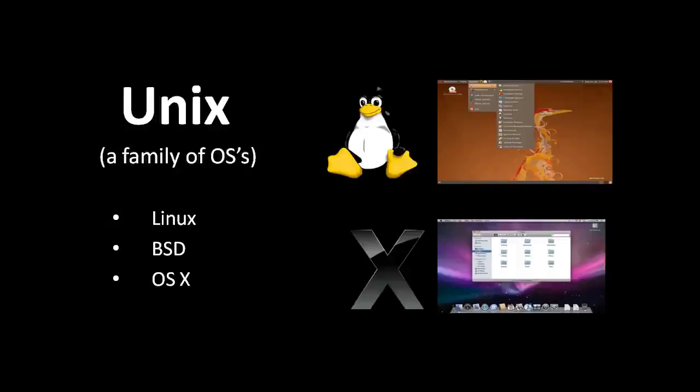Both Linux and BSD, short for Berkeley Software Distribution, are Unix-like operating systems that are free and open source, developed by a scattered community around the world. Apple's OS X was originally based on a variant of BSD, but is itself proprietary and only legally available for Apple's own computers, even though the underlying Apple hardware is the same as standard PC hardware.